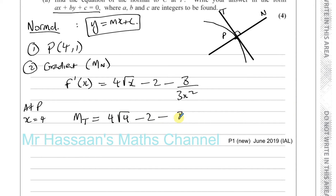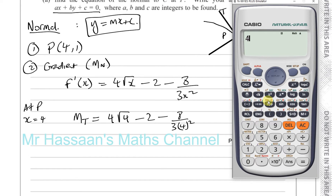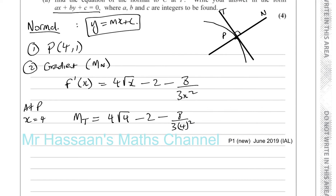The gradient of the tangent = 4 × √4 − 2 − 8/(3 × 4²) = 4 × 2 − 2 − 8/48 = 8 − 2 − 8/48, which gives us 35/6. So the gradient of the tangent is 35/6.